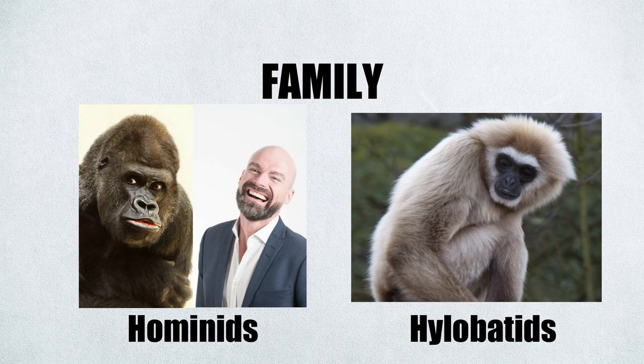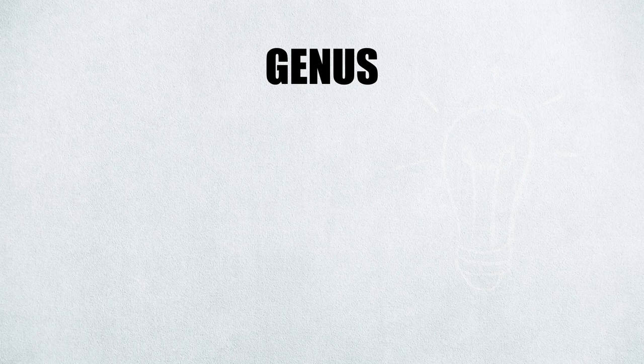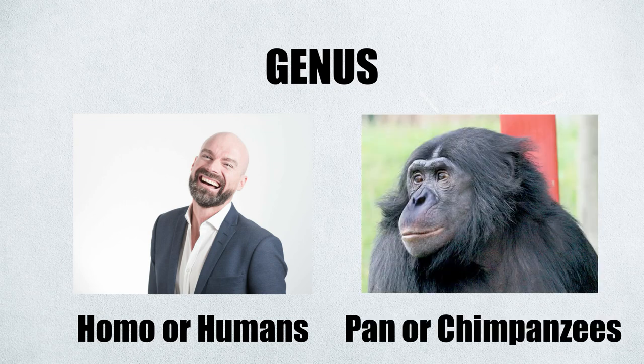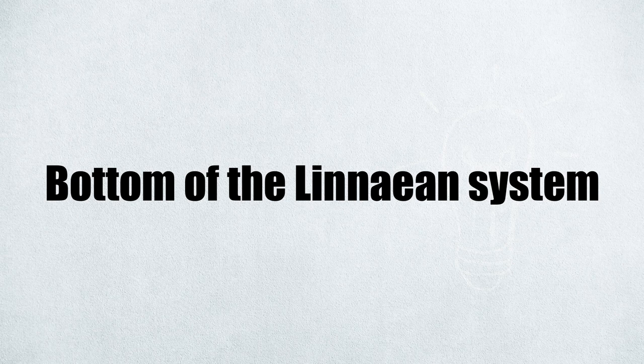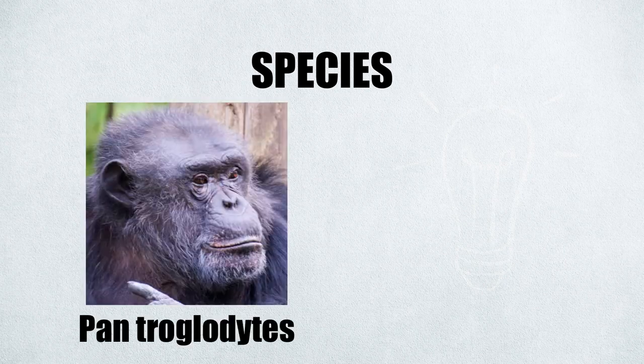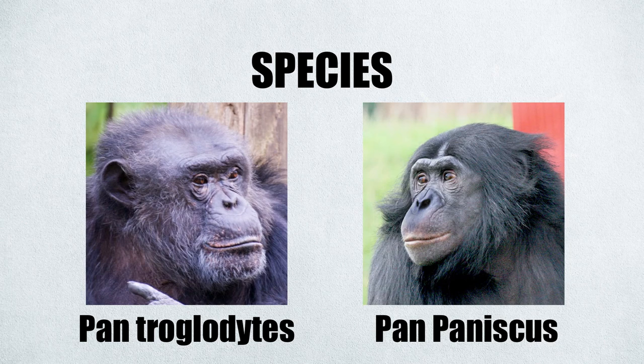Class is divided into orders. Orders in the mammal class include rodents and primates. Order is then divided into family. Families in the primate order include hominids, which are apes and humans, and hylobatids, which are gibbons. Below family is the genus or genera. Genera in the hominid family include Homo, or humans, and Pan, which are chimpanzees. At the bottom of the Linnaean system is the species — for example, Pan troglodytes are the common chimpanzees, and Pan paniscus are the pygmy chimpanzees.